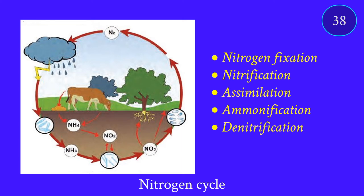They combine with other elements in the soil to form nitrates through nitrification. When organisms die and through the excreta of animals, nitrogen is returned to the cycle. This nitrogen cycle is a little bit complex overall.